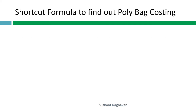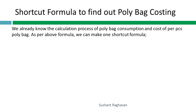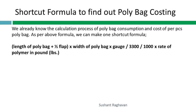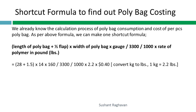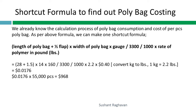Shortcut formula to find poly bag costing: (Length + half flap) × width × gauge ÷ 3300 ÷ 1000 × rate of polymer per pound. Calculation: (28 + 1.5) × 14 × 160 ÷ 3300 ÷ 1000 × 2.2 × 0.4 = $0.0176 per piece. Total cost for 55,000 pieces: 0.0176 × 55,000 = $968. So the total cost of poly bags for 55,000 pieces is $968.